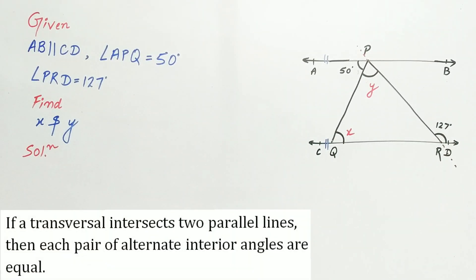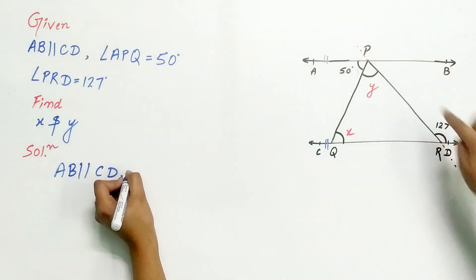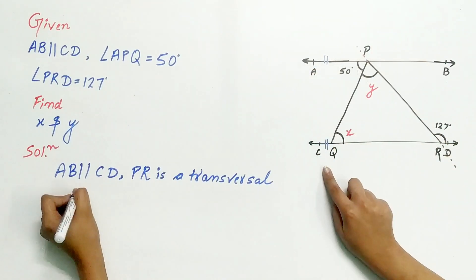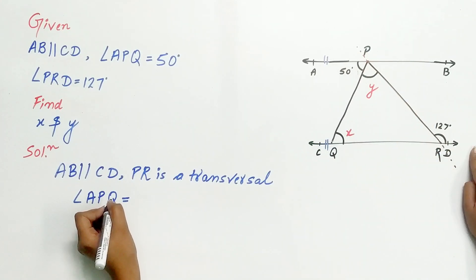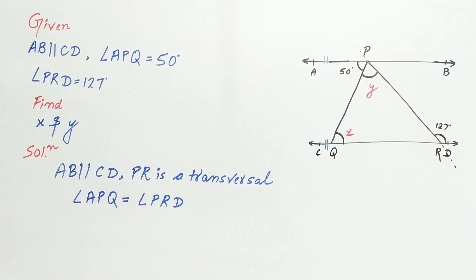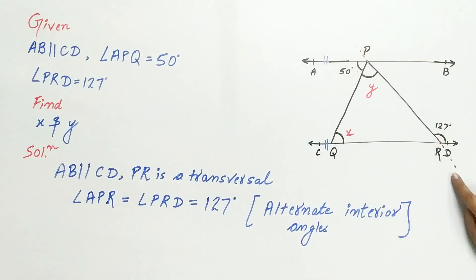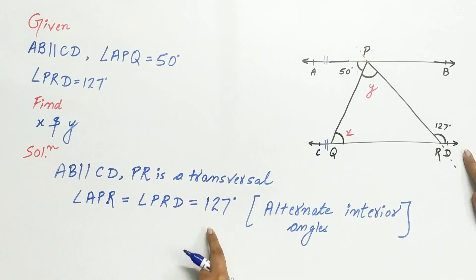So the pair of alternate interior angles are equal. AB is parallel to CD, PR is a transversal. Angle APR is equal to angle PRD, that is 127 degrees, because of alternate interior angles.